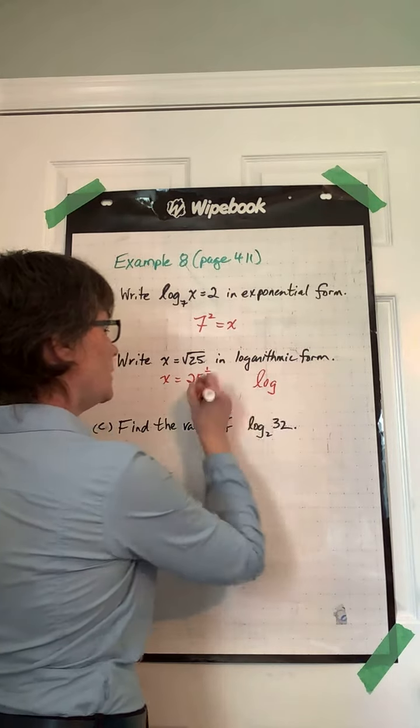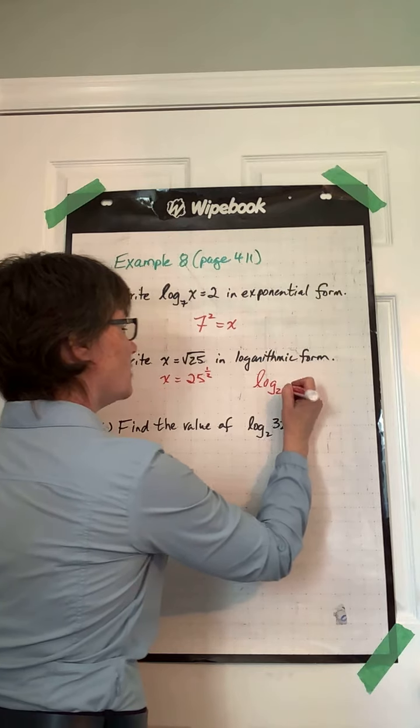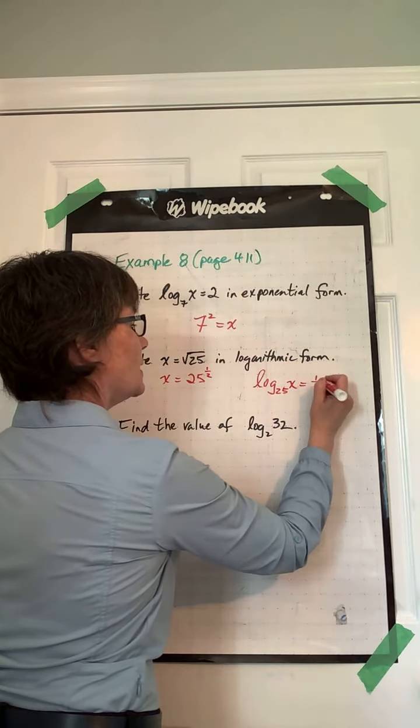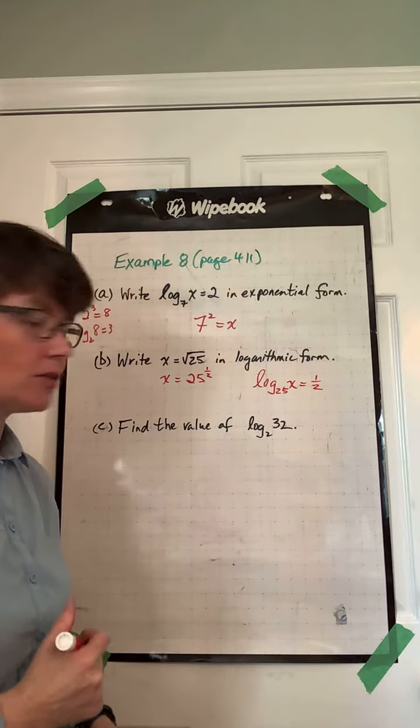The base stays the base, so it's log base 25 of x equals 1 half. The exponent is the answer in a log.